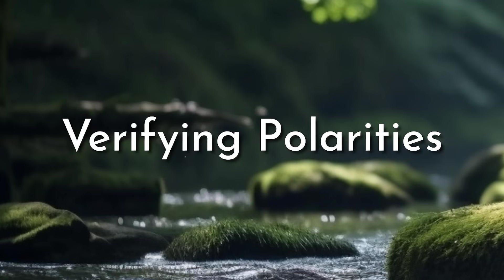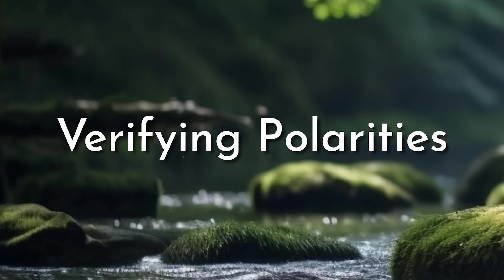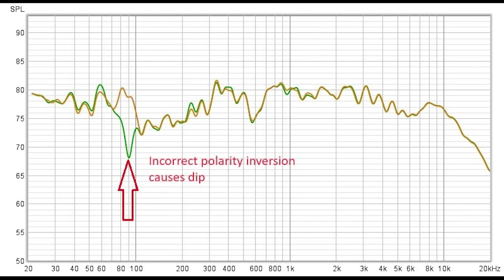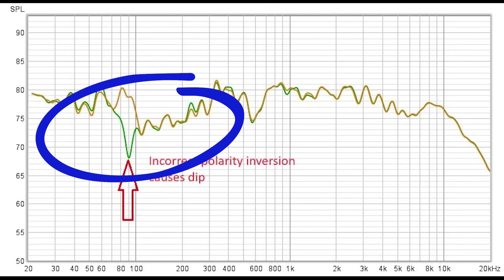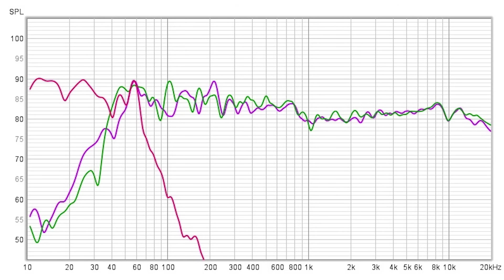By inverting the full-range speakers and subwoofers relative to one another, you can observe dips in the crossover region. Here, the subwoofer is inverted, which reveals a significant dip around the crossover frequency. The same thing can be done with the main speakers to determine if they are subtracting or adding to one another. Generally, polarity is correct when the levels are additive.